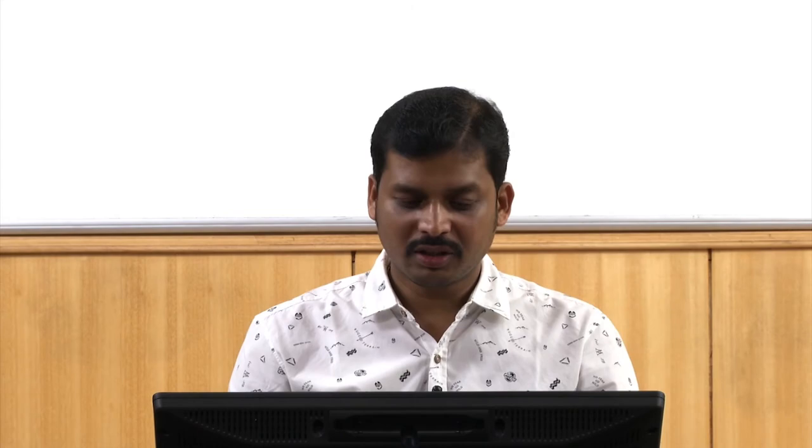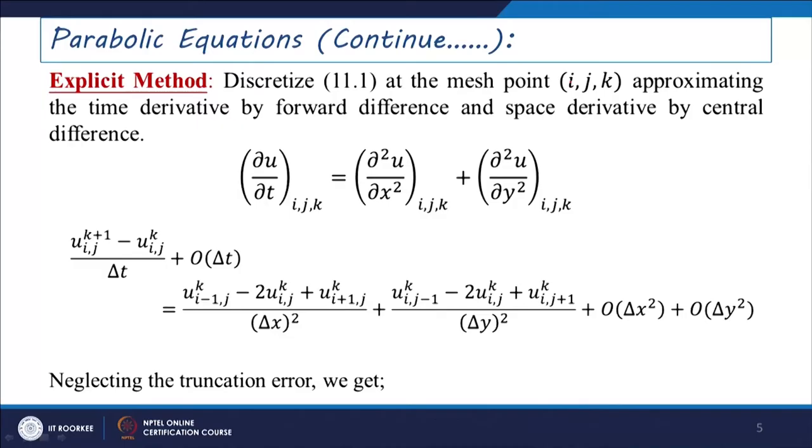We step from T₀ = 0, to T₁ = del T, to T₂ = 2·del T, and so on. For the explicit method, we discretize del U / del T = del² U / del X² + del² U / del Y² at mesh point (I, J, K), where X is the i-th coordinate, Y is the j-th coordinate, and K is the time level.